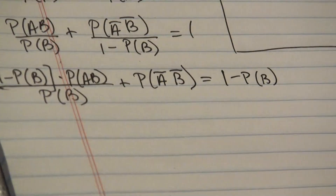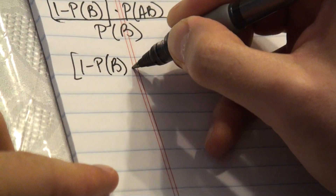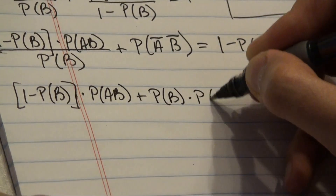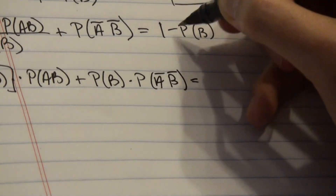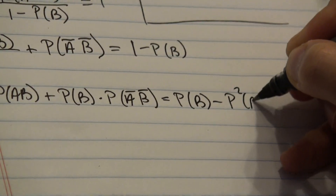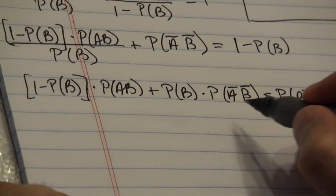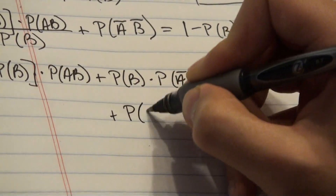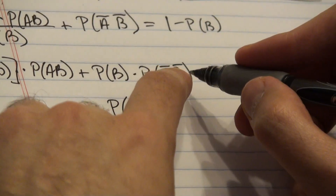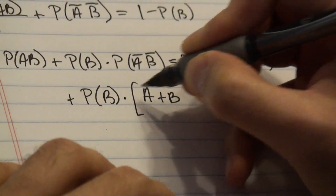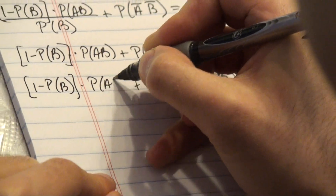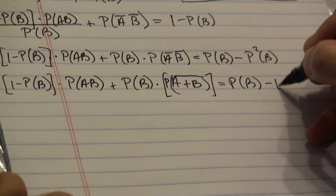Now I'm going to multiply both sides by probability of B. So we get 1 minus probability of B times probability of AB, plus probability of B times probability of A-not, B-not, and then probability of B times 1 minus probability of B, which equals probability of B minus probability of B squared. Now using De Morgan's rule, I can rewrite the intersection of A-not B-not as the complement of A union B, that is probability of A union B, everything not. And it still equals probability of B minus probability of B squared.